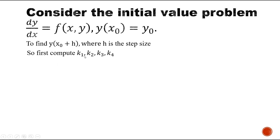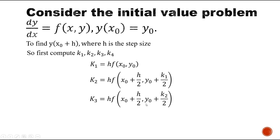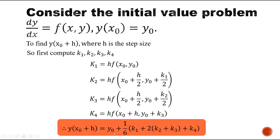For this, first we need to find the values k1, k2, k3, k4. k1 = h·f(x₀, y₀); k2 = h·f(x₀ + h/2, y₀ + k1/2); k3 = h·f(x₀ + h/2, y₀ + k2/2); and k4 = h·f(x₀ + h, y₀ + k3). Using all four values: y(x₁) = y₀ + (1/6)(k1 + 2k2 + k3 + k4). This is the general formula for solving the initial value problem using Runge-Kutta method of fourth order.